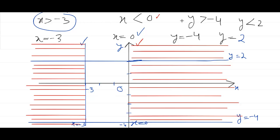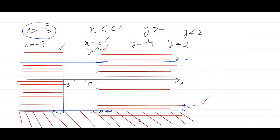Now come to the third one: y is minus 4. This is the y equals minus 4 line, and y is greater than minus 4, so the required region is upward. But we will shade downward. So we have shaded the downside of the y equals minus 4 line.